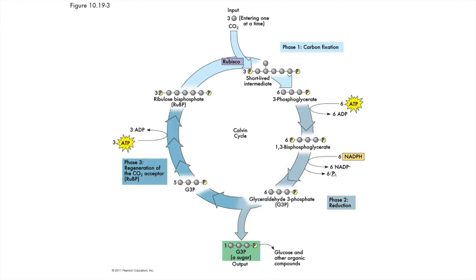But we need to close the loop. We need step three: regeneration of RUBP, so it can fix more carbon dioxide. This step has two parts. First, reshuffling of the carbon atoms so that instead of five molecules with three carbons, we have three molecules with five carbons. Second, we energize those five-carbon molecules with more ATP. This gives us ribulose bisphosphate once again, and we are ready to accept more carbon dioxide — and the Calvin cycle keeps rolling along.